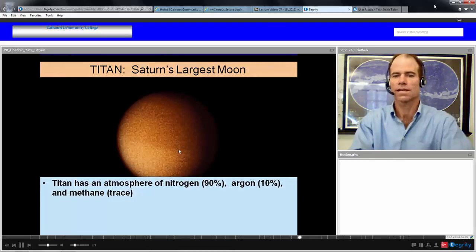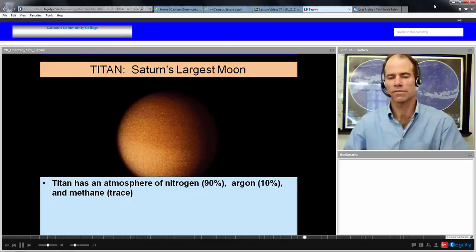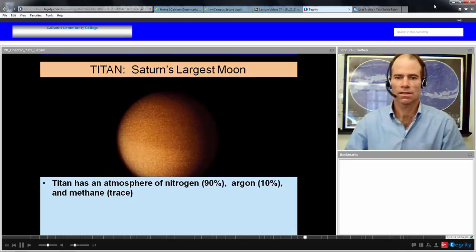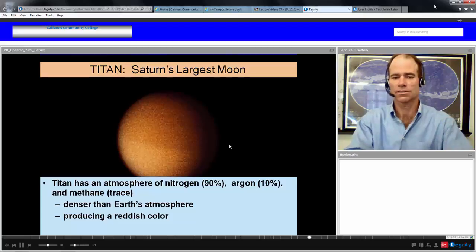Here is Titan. This picture taken by Voyager 1. Titan has an atmosphere of nitrogen 90%, argon 10%, and a trace of methane. Our atmosphere on Earth is about 80% nitrogen, but a primordial Earth probably had an atmosphere very similar to Titan's—about 90% nitrogen, traces of these other gases, not any oxygen. That's what a primordial Earth probably was like. This atmosphere is actually denser than our atmosphere, about 60% denser, producing the reddish color. This is the Voyager photo.